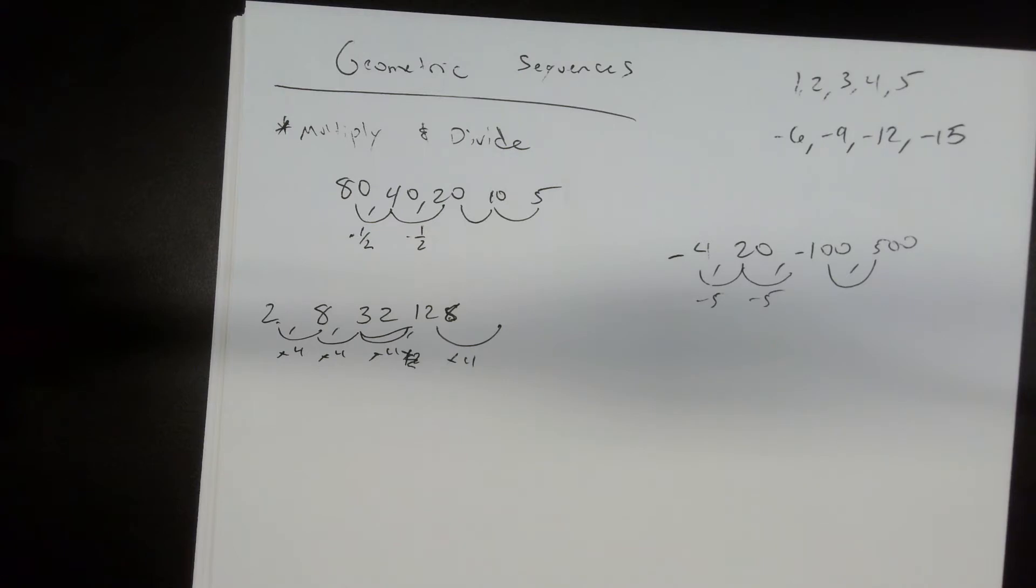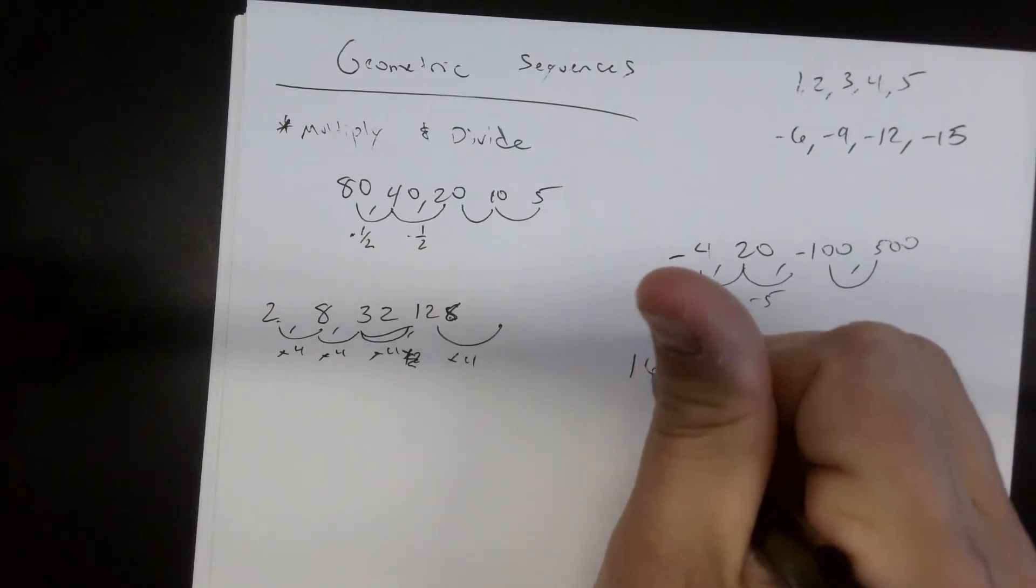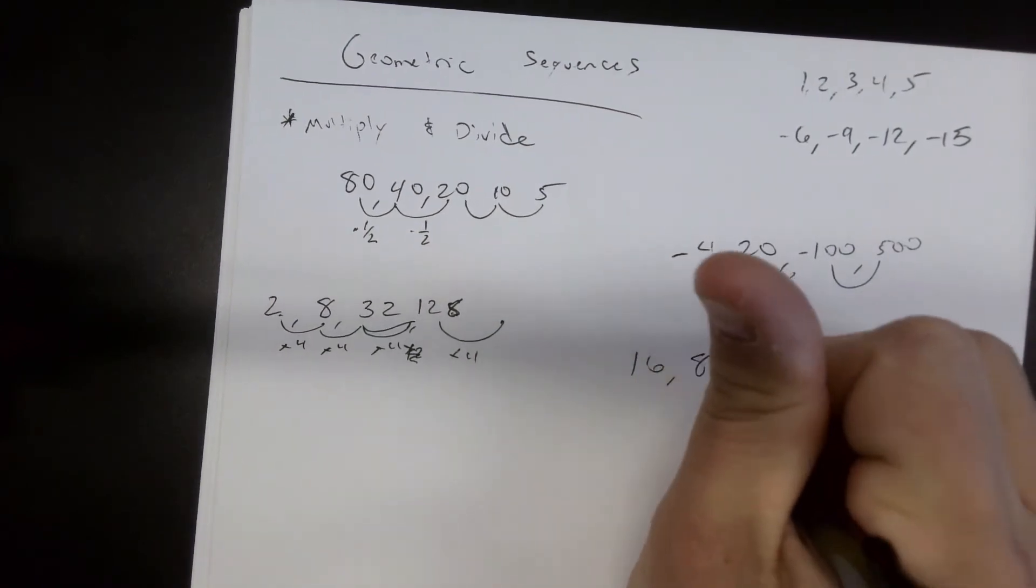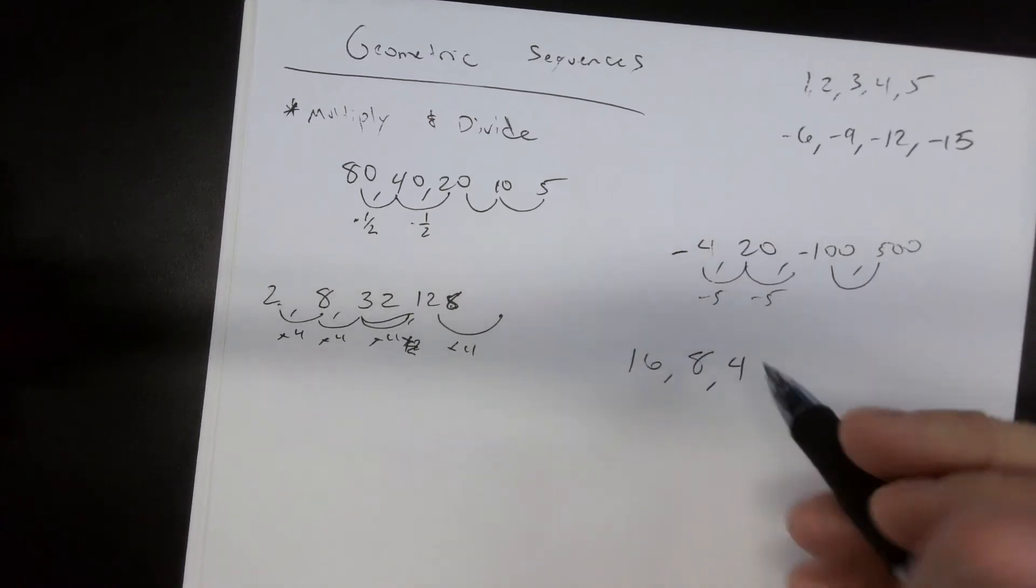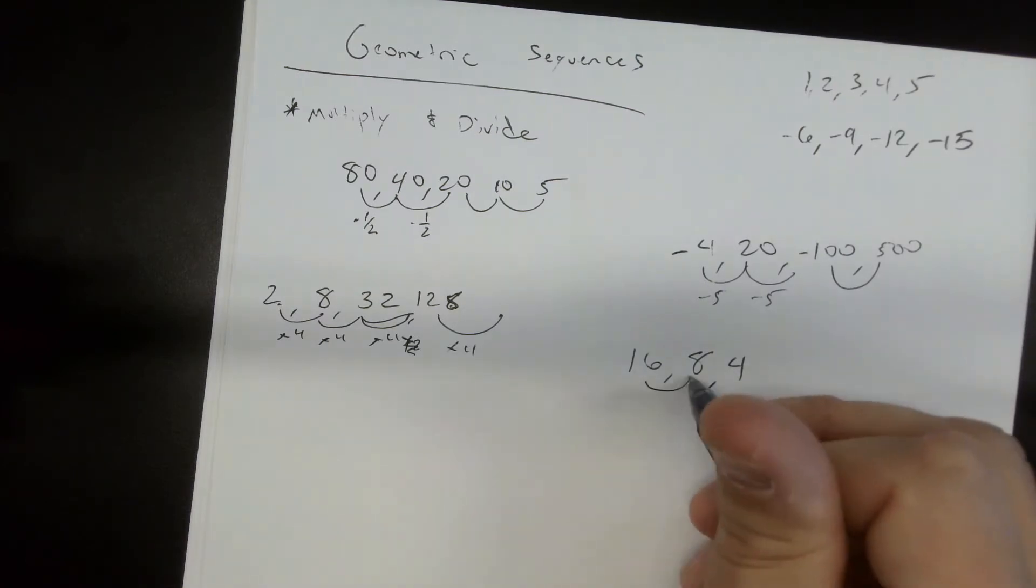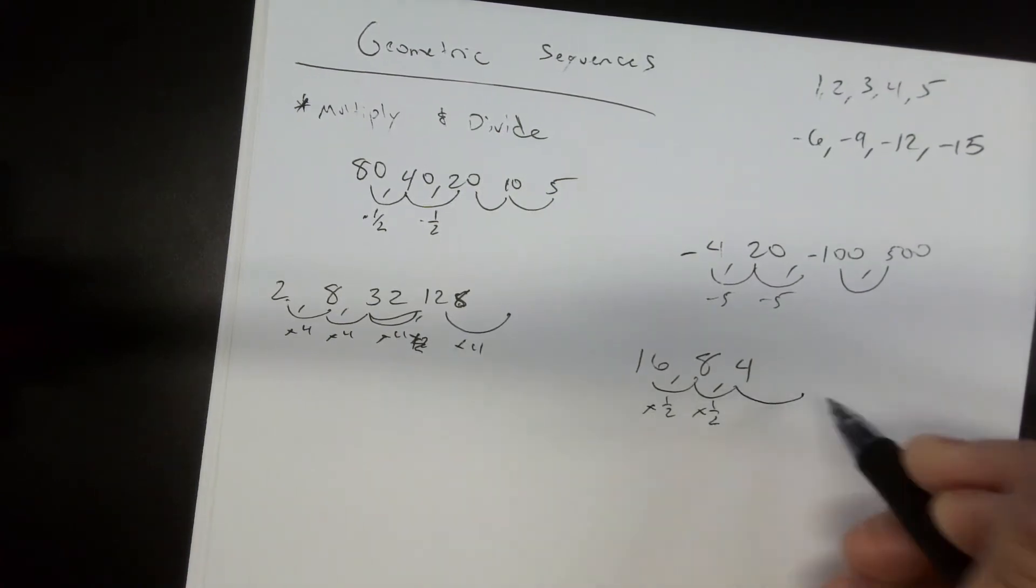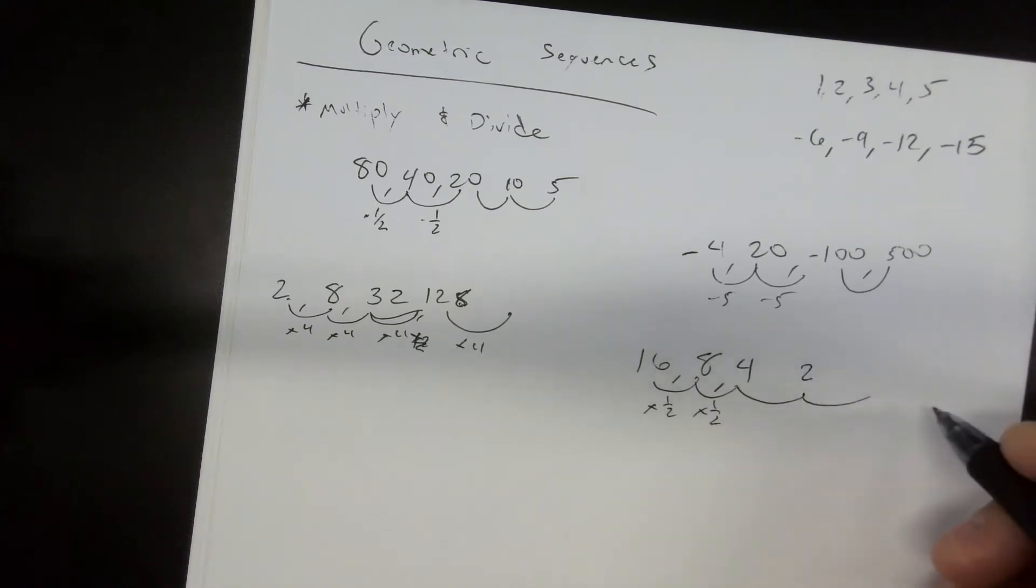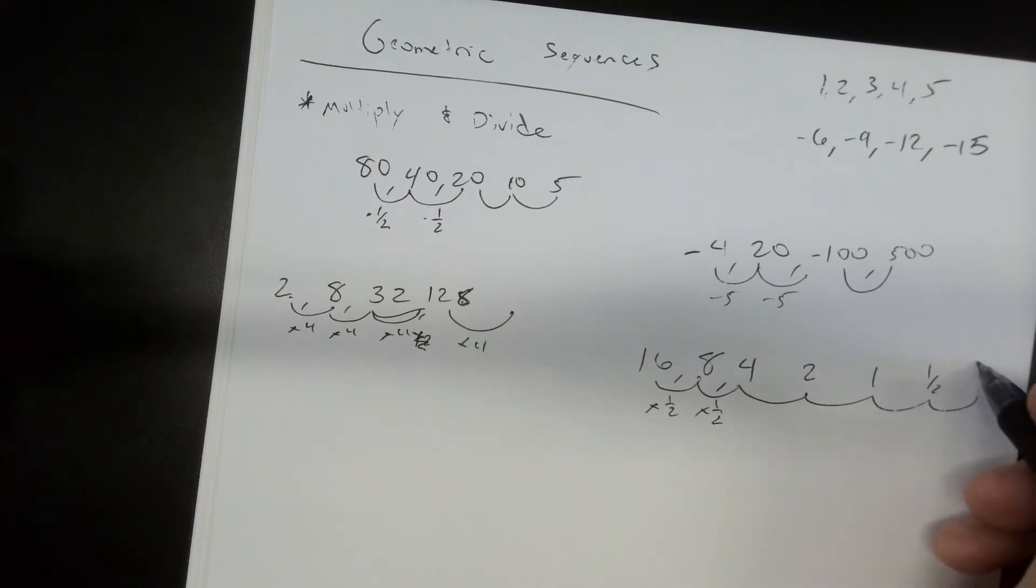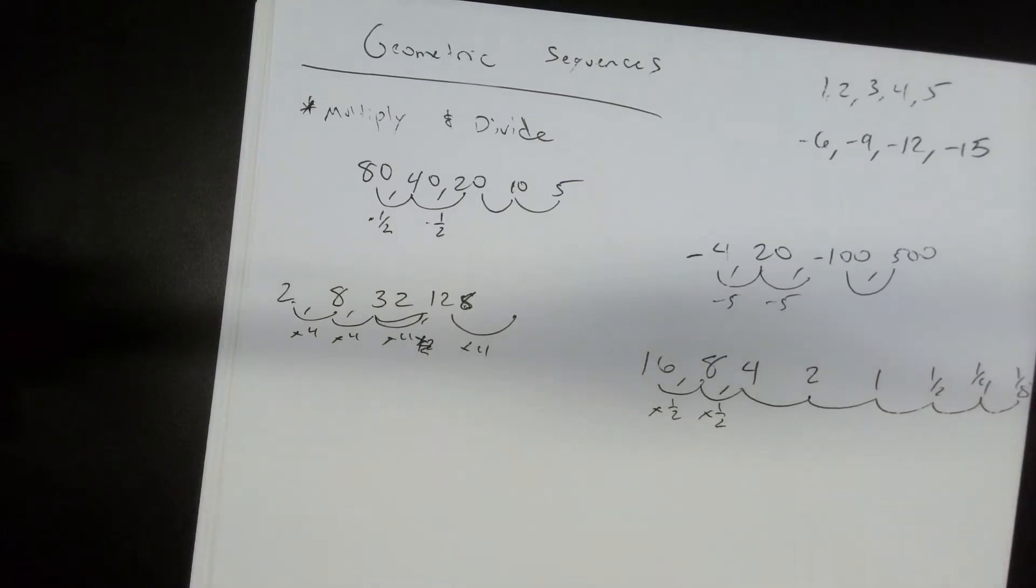So these are simple examples of geometric functions and how they work. Remember that we're always multiplying. So if I have 16, 8, 4. Now we've already done one kind of like this. What's happening to these? You're dividing by two, but how do I want you to say it? Multiply by one half. You're multiplying by a half. If you're dividing by two, you're multiplying. So what would be the next number? Two. What would be the next one? One. What would be the next one? One half. What would be the next one? One fourth. What would be the next one? One eighth. So on and so forth.